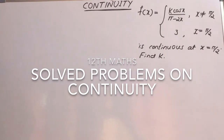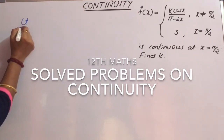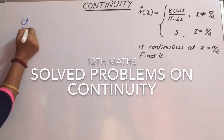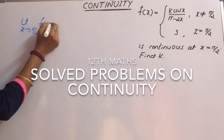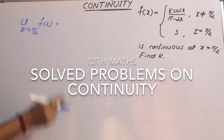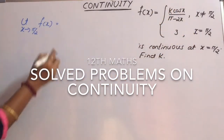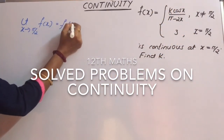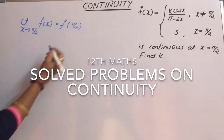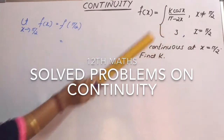To find the value of k, let us consider the limit of the function — that is, limit as x tends to π/2 of f(x) must be equal to the function value at the given point x = π/2, which is f(π/2). From the given data, f(π/2) = 3.